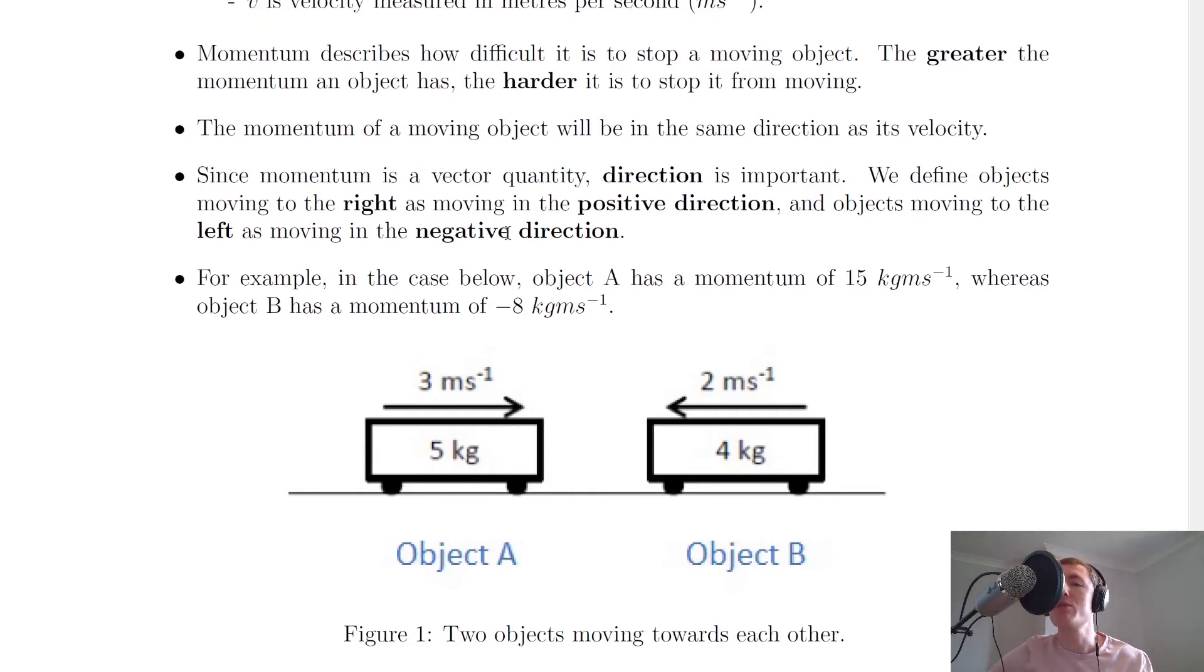So this idea of objects moving to the right having a positive velocity, and objects moving to the left having a negative velocity, it's going to be really important when we're doing problems on momentum and conservation of momentum.